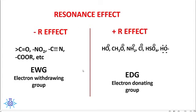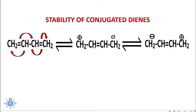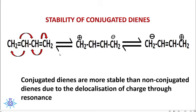Let us look at the application of mesomeric effect on the stability of conjugated dienes. In 1,3-butadiene, the double bonds are in conjugation, so there is redistribution of electrons. These are the resonance forms of 1,3-butadiene. The greater stability of conjugated dienes is due to the mesomeric effect — delocalization of pi electrons forms two resonating forms, making conjugated dienes more stable than non-conjugated dienes.